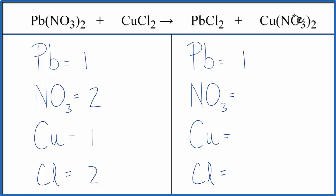On the product side, one Pb, one nitrate times two giving us two of those, one copper, and two chlorines.